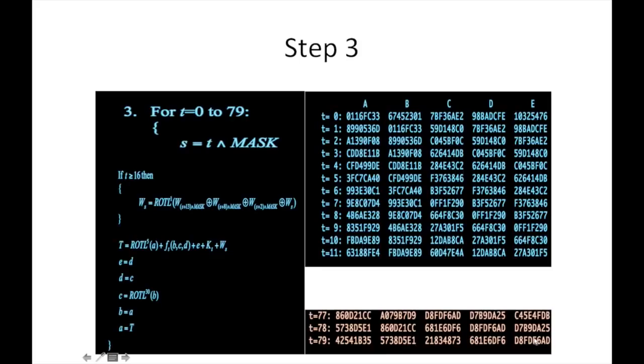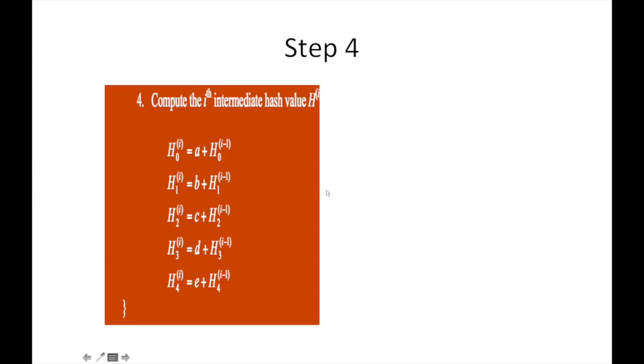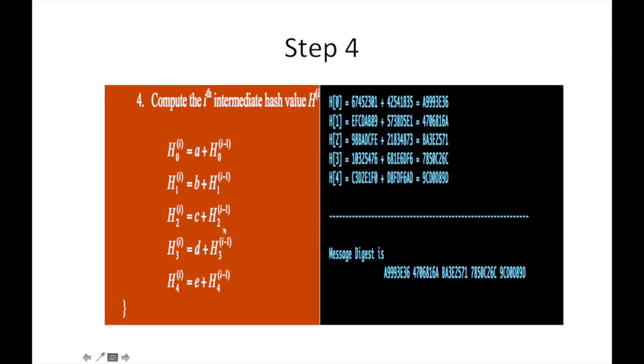Once we arrive with all five working variable values, then step four is to compute the ith intermediate hash value H. We'll add the initial hash value with the final working value and we got a message digest. We have added the initial hash value with the final working value, and we got a message digest. This is the example of SHA-1 algorithm.